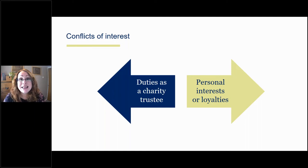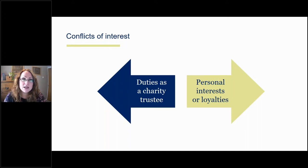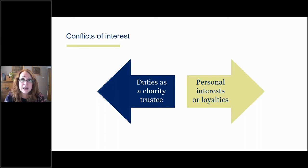The question is: is it potentially going to affect decision making, or might there be a perception externally that it has? The Commission also says this should be considered as a pre-appointment issue. If you identify that a particular individual you're considering appointing as a trustee is going to be regularly subject to conflicts because of another position or loyalty they hold, then you need to seriously consider whether it's going to be appropriate for them to be appointed as a trustee at all.